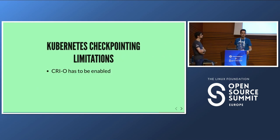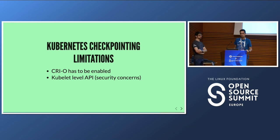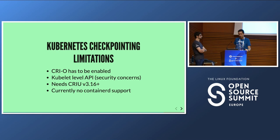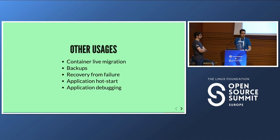Kubernetes checkpointing has its own limitations: CRIU must be enabled — for example on EKS in AWS the runtime isn't CRI-O so you can't use this. You need CRI-O version 3.16 or higher. There are security concerns since the dump contains full raw memory, so the checkpoint file itself could expose important data. And if you're using containerd there's currently no support.